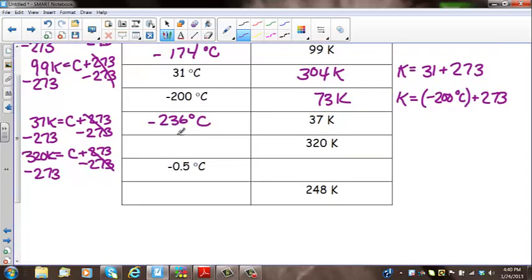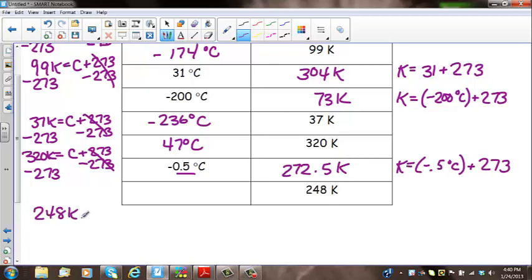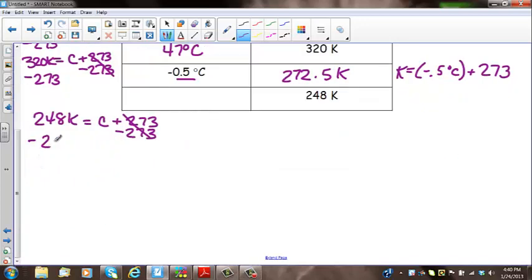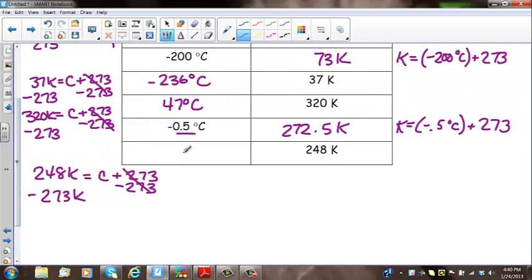A couple more for the Celsius side. 37 Kelvin equals Celsius plus 273. Again, I'm subtracting. Reverse order of operations. 37 minus 273 is going to be a fairly large negative number. It's going to give us negative 236 degrees Celsius. And then 320 Kelvin equals Celsius plus 273. Finally, I have one that's not negative. So we have 320 minus 273. It's going to give us 47 degrees Celsius. Got a negative a half a degree over here. Kelvin equals negative 0.5 degrees Celsius plus 273. So we're just reducing 273 by a half a degree. So 272.5 Kelvin. And the last one, 248 Kelvin equals Celsius plus 273. I'm going to subtract from both sides. It's going to be negative, but it's going to be a small negative number. And that's going to give us negative 25 degrees Celsius.